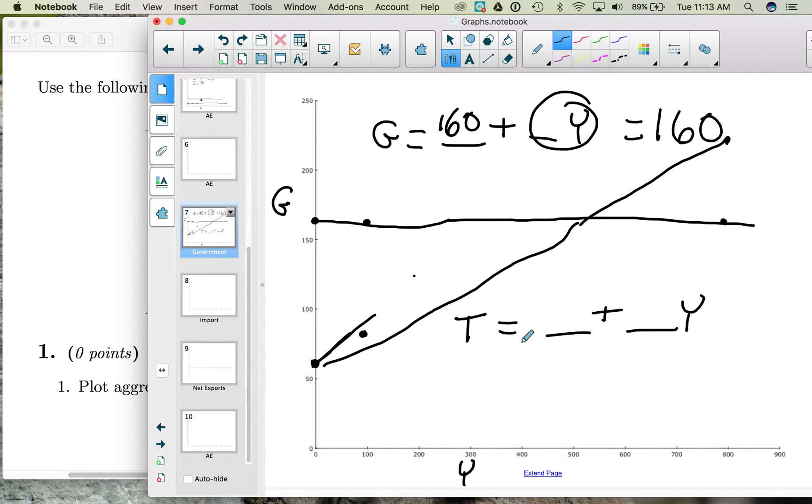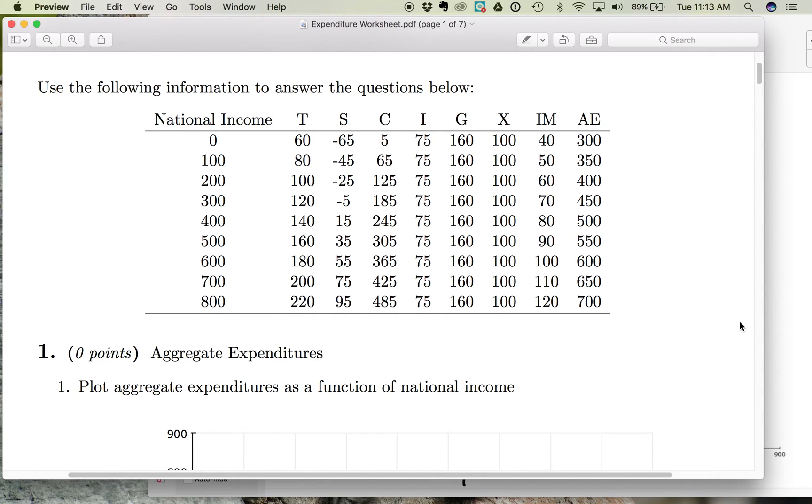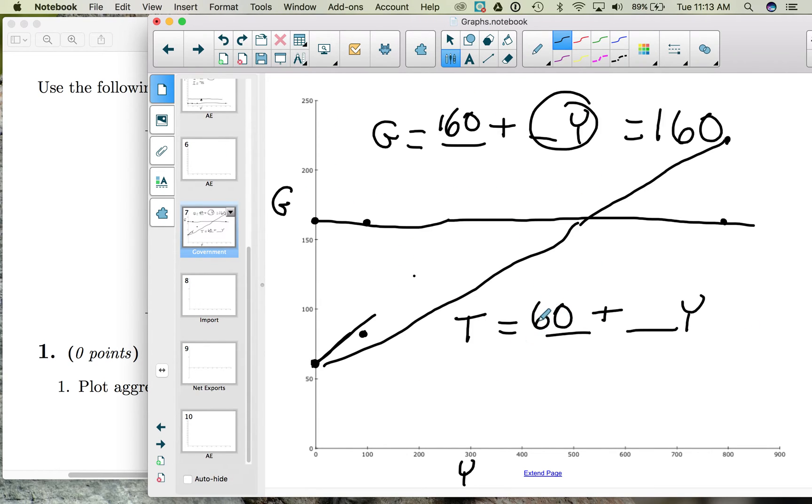So taxes are both autonomous and induced. In this example, when income is zero, our net taxes are 60. So there are taxes we pay that we would pay even if we had no income. For example, if our city or province or state had highway tolls, we have user fees. So if you think about when you're camping in a provincial park or state park, you have to pay to use those sites. Even if your income is zero, you still have to pay them. So there are taxes that we pay, including property tax, we would pay even if we had no income.